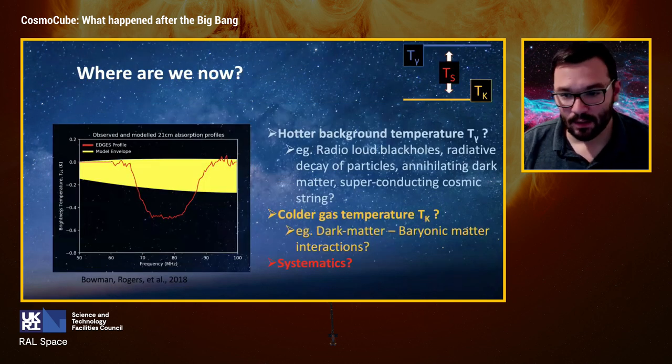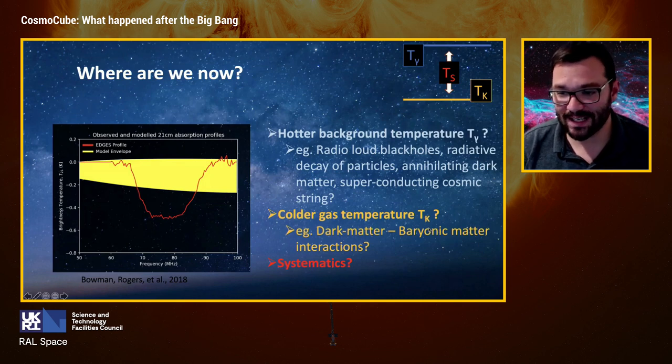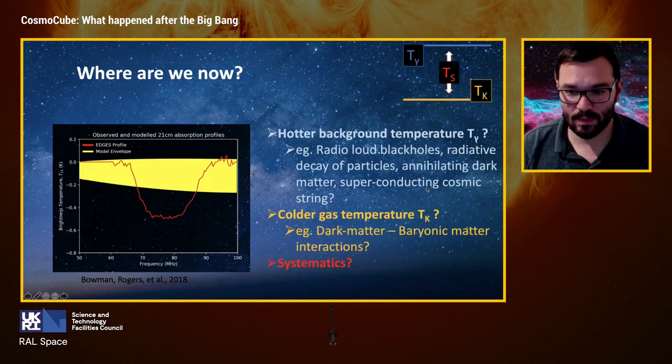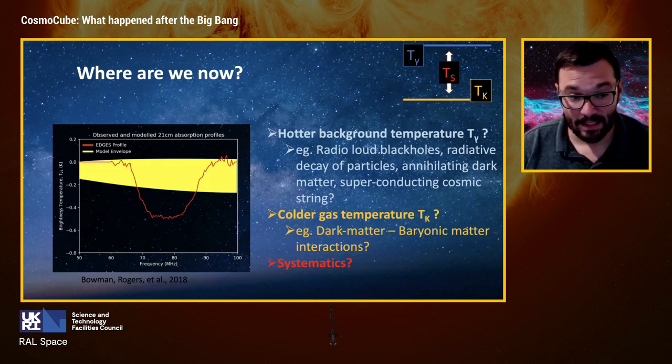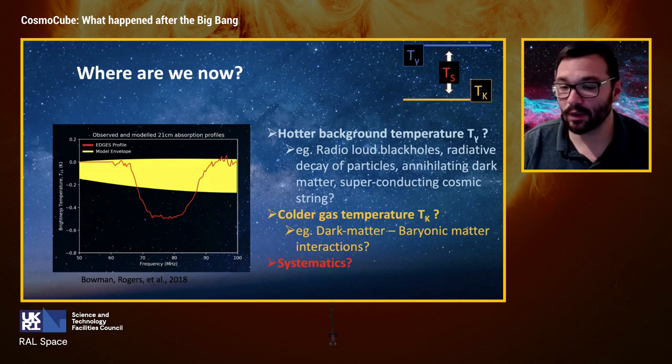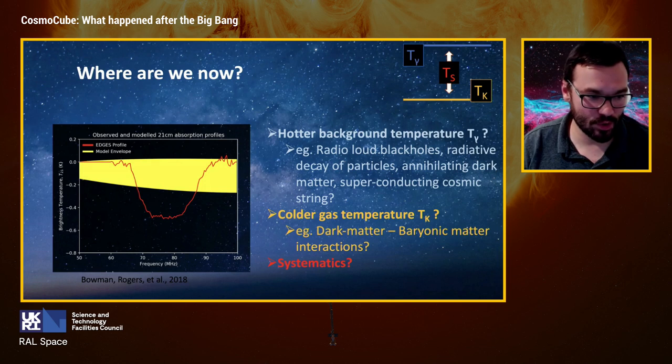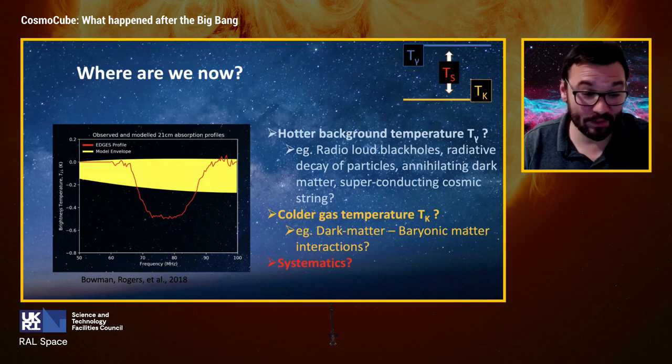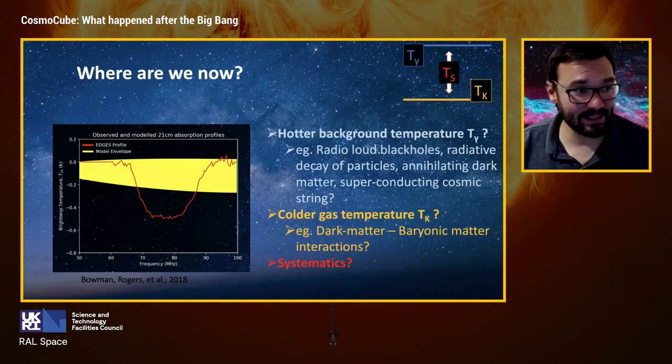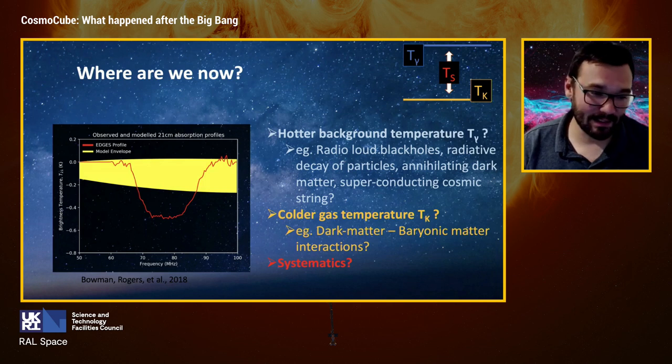So where are we now? In 2018, only three years ago, the very first and only claimed detection of the 21 centimeter line from the cosmic dawn was reported by the EDGES experiment, a US-led experiment. The signal, which is shown in red in this plot, corresponds to that absorption feature from the cosmic dawn that I described earlier. Its existence was predicted by models, as I showed you before. However, that signal is more than twice deeper than any theoretical predictions—the envelope of all those theoretical predictions is in the yellow area of the plot. Also, the form, the shape of that flat bottom red line is not explained by theory. So in order to explain this result, there have been more than 200, nearly 300 journal papers now appearing in the literature over the last three years with all sorts of exotic explanations.